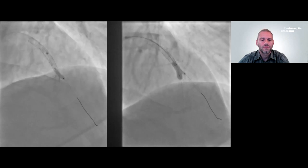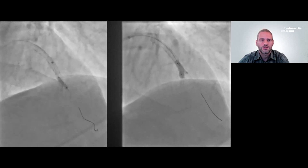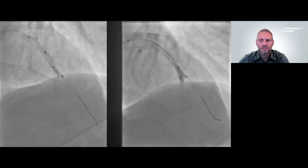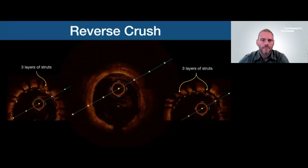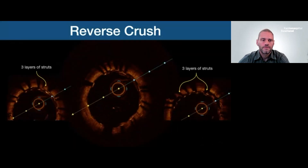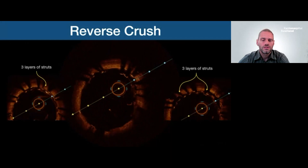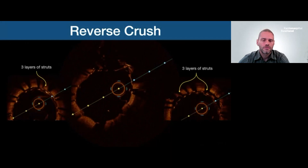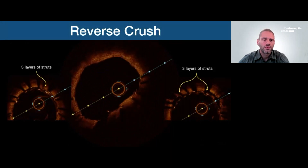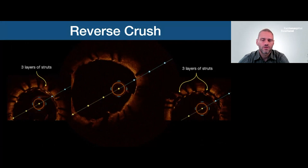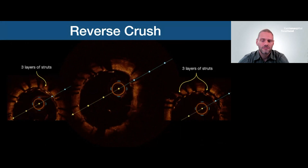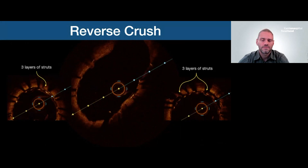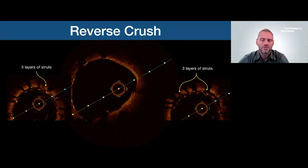I then rewired the struts into the side branch and performed a kissing balloon, followed by a final POT with a 4.0 balloon in the proximal segment. OCT confirmed three layers of struts of the crushed prolapsed side branch stent distal to the bifurcation.